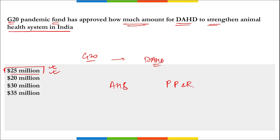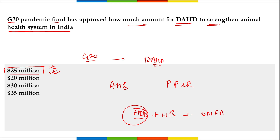The $25 million will be used for animal health security and pandemic preparedness and response. The project will be carried out by the Asian Development Bank as the leading implementing entity, along with the World Bank and the United Nations Food and Agriculture Organization.